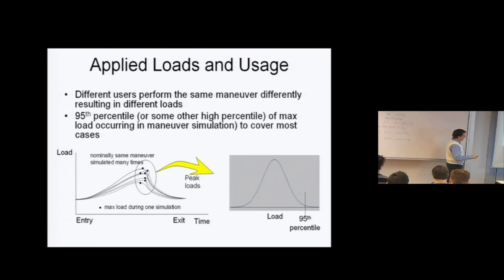You take this distribution of the highest loads and the 95th percentile, or something along those lines—could be 90th, could be 99th depending on the application—becomes your applied loads, accounting for variability in how that maneuver, a 3G turn for example, might be flown.